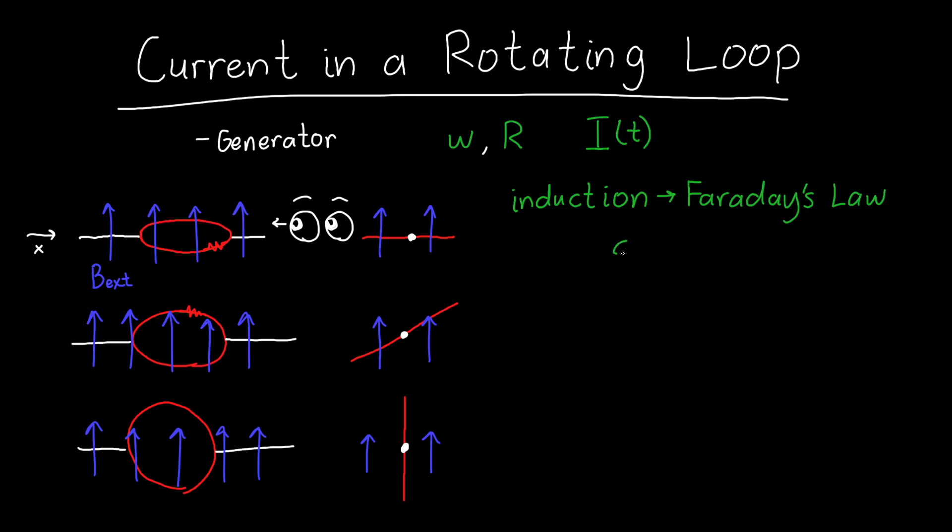Now Faraday's law says that the induced EMF around the loop, so the total voltage dropped across this resistor is equal to the negative derivative of the magnetic flux as a function of time. So to solve this problem, we need to start by finding the magnetic flux.